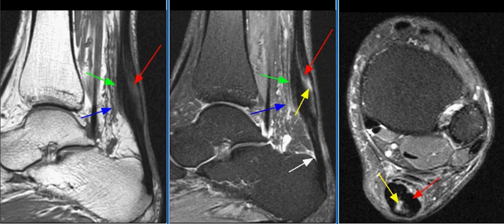This is an elderly female patient with left ankle pain. The MR examination of the ankle shows abnormally enlarged Achilles tendon with heterogeneous signal intensity, consistent with non-insertional tendinosis, with fusiform enlargement and anterior convexity of the tendon.